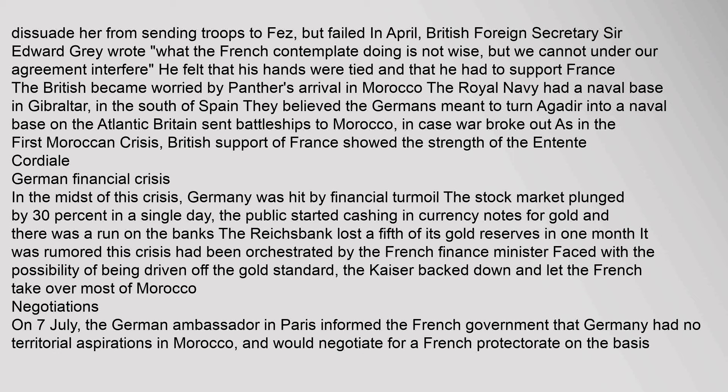On 7 July the German ambassador in Paris informed the French government that Germany had no territorial aspirations in Morocco, and would negotiate for a French protectorate on the basis of compensation in the French Congo region and safeguarding of her economic interests in Morocco. The German terms, presented on 15 July, contained an offer to cede the northern part of Cameroon and Togoland, but demanded the whole of the French Congo from the Sangha River to the sea, with the later addition of France's right of preemption of the Belgian Congo.